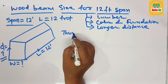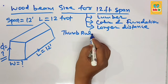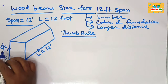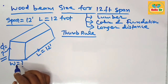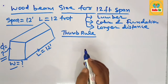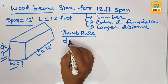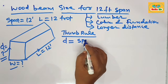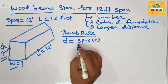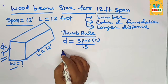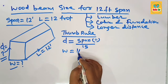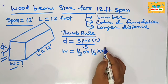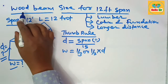We calculate wood beam size as per the thumb rule. For sizing a wood beam, you need to find the depth section and the width section. The depth of the wood beam is equal to the span in inches divided by 15. The width section of the beam is one-third to one-half of the depth section of the beam.